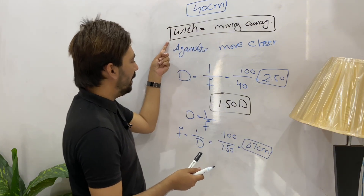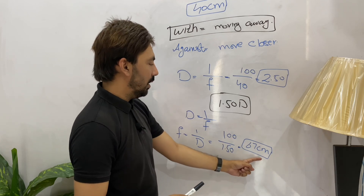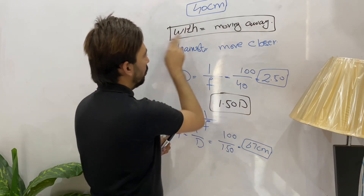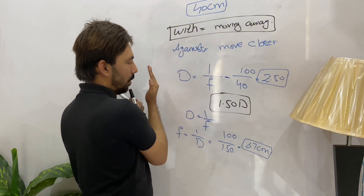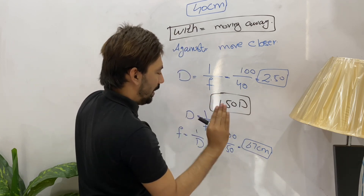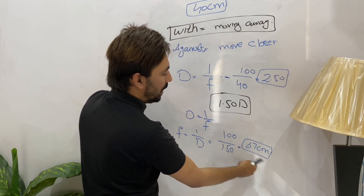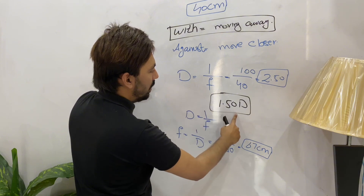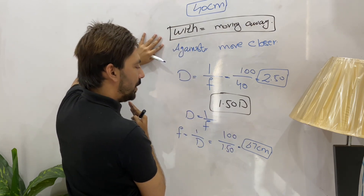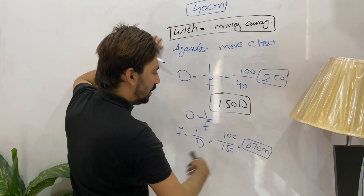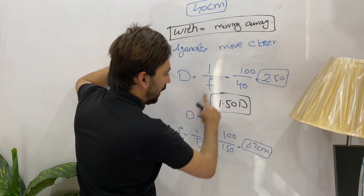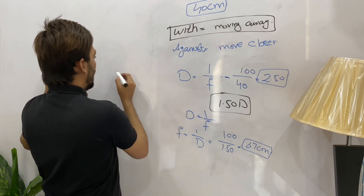At 40 centimeters the dioptric value should be 2.5, but we find with movement, so to neutralize it we move away from the patient. When we reach 67 centimeters, the with movement is neutralized. Converting 67 centimeters into dioptric value gives 1.5 diopters. So at 40 centimeters the value was 2.5 and at 67 centimeters the patient was neutralized.